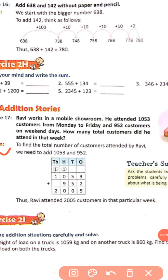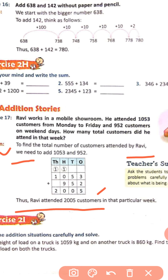To find the total number of customers attended by Ravi, we need to add the numbers. After adding, you will get 2005 as the sum. Thus, Ravi attended 2005 customers in that particular week.